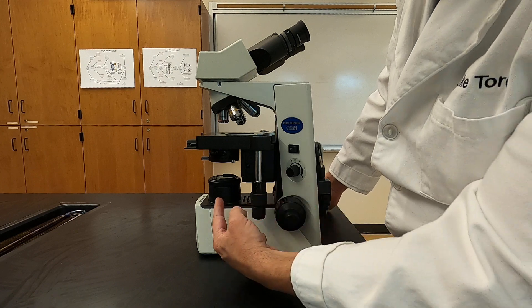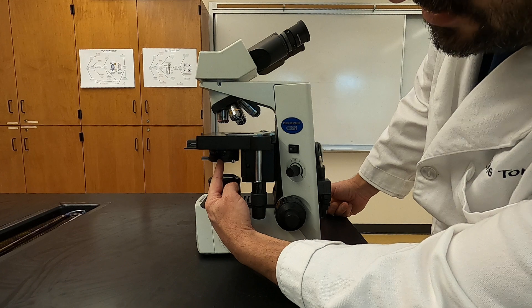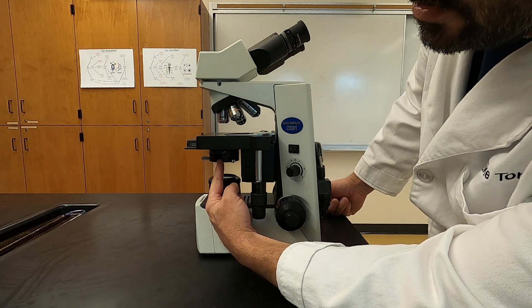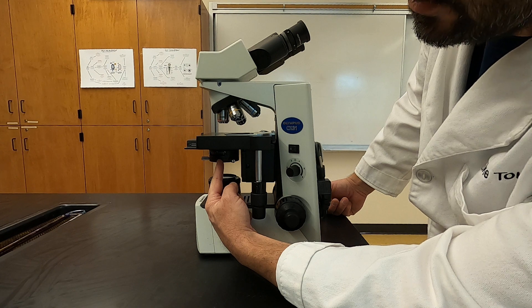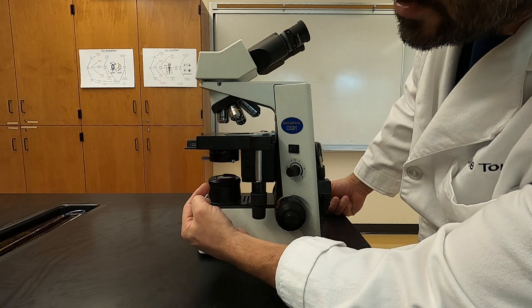Continuing underneath, we've already shown you the light source under here. Right above that is something called a condenser. You can raise and lower the condenser. We're not going to go over that right now. We'll save that for some more advanced techniques. We're going to start with the condenser at its uppermost position.